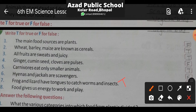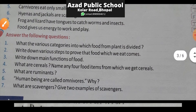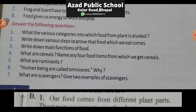Next: Food gives us energy to work and play — khane se hume energy milti hai jisse hum kaam aur khelte hain — this option is also true. Now moving ahead with Section D — Answer the following questions. Question 1: What are the various categories into which food from plants is divided?